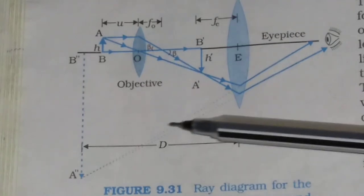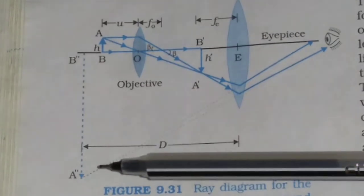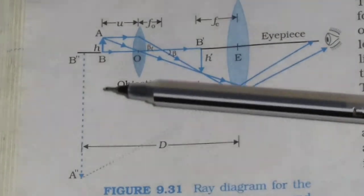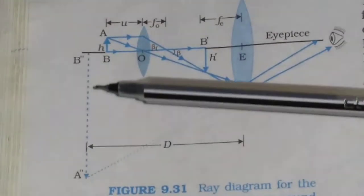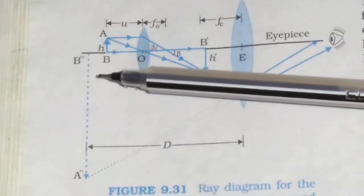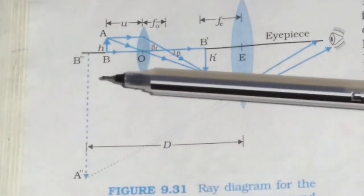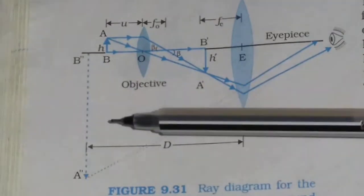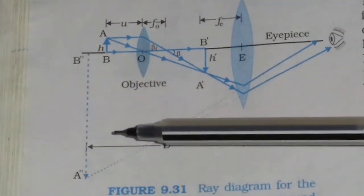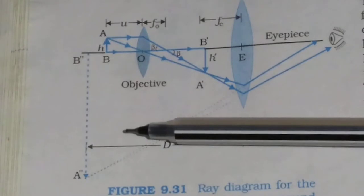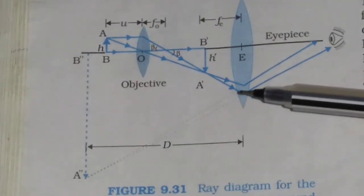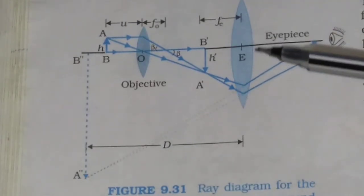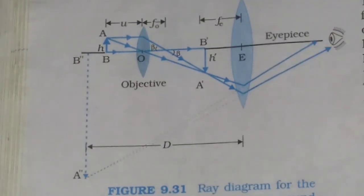The final image, A', B', A'', B'', which is enlarged and virtual, is formed at the near point or at infinity due to the eyepiece.